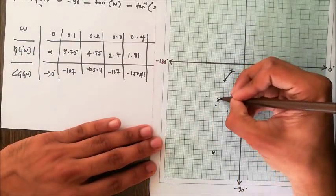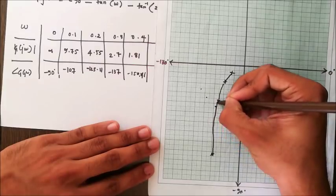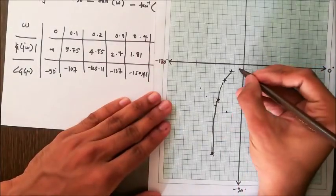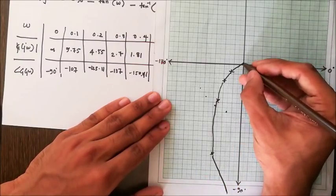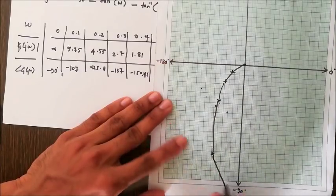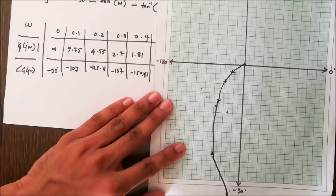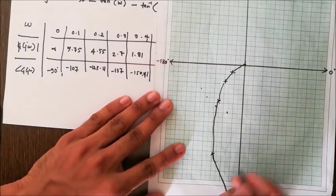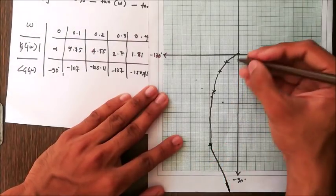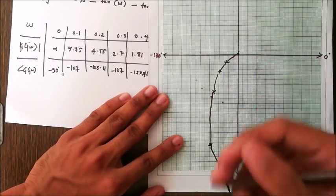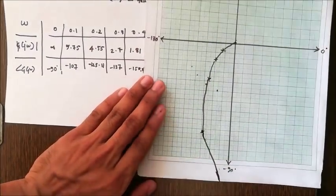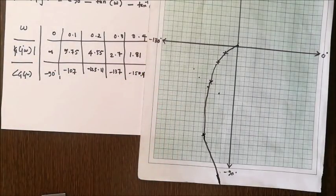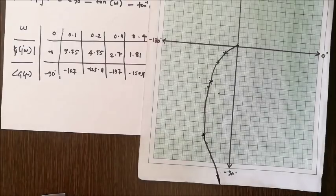Joining these dots gives the polar plot. The curve extends to infinity near -90° as ω approaches 0, and the plotted points trace the arc from there inward. You should find more points and plot accordingly to get a smoother polar plot. That's all about polar plot — I hope you got a brief idea. Practice with more problems and you will get the hang of it. Subscribe and stay connected — thanks for watching, have a lovely day!